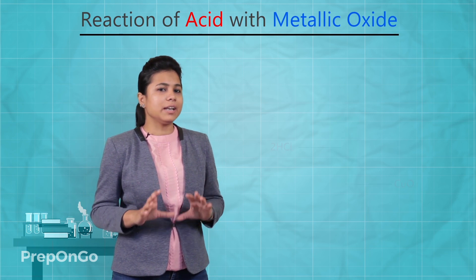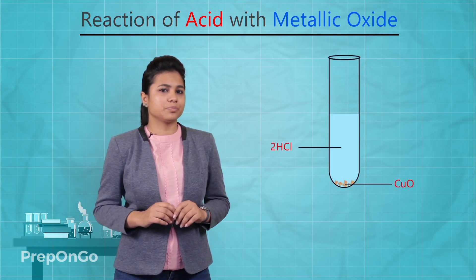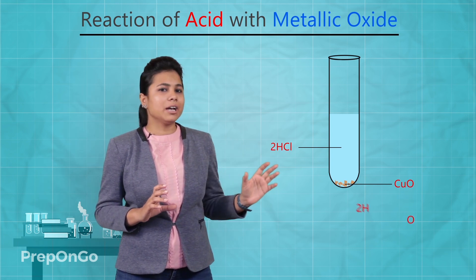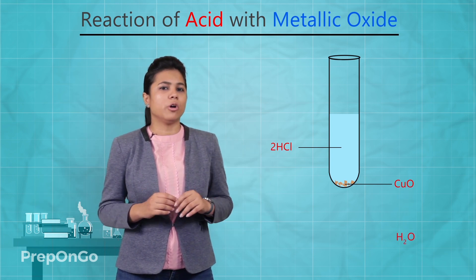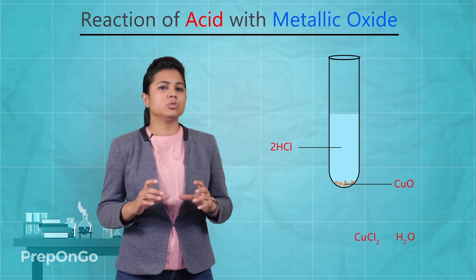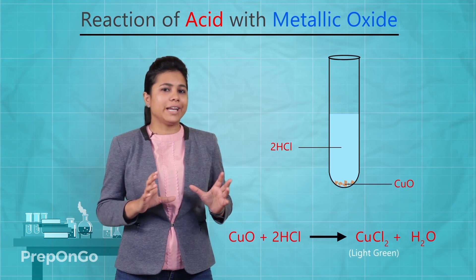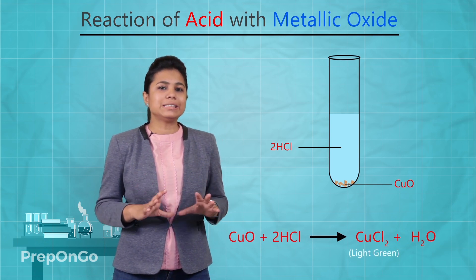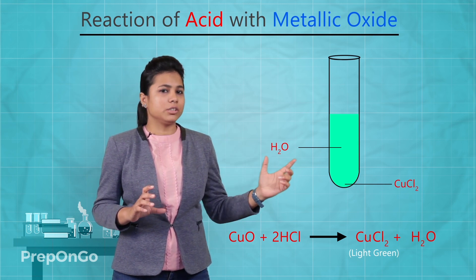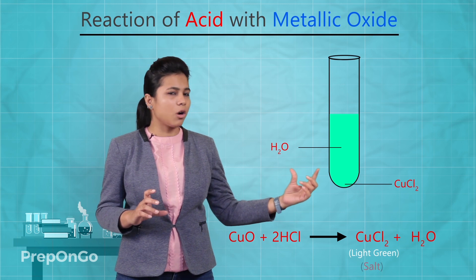For example, if we take copper oxide and hydrochloric acid, the oxygen will combine with hydrogen to form water, and the remaining copper and chloride will combine to form copper chloride. Copper chloride is of light green color. So we got copper oxide and HCl resulting in the formation of salt and water.